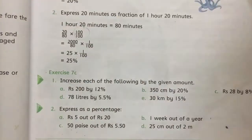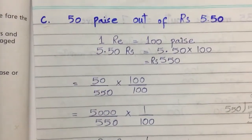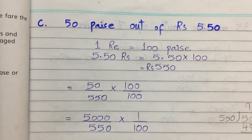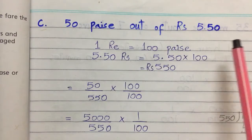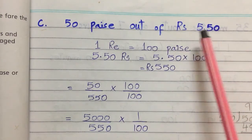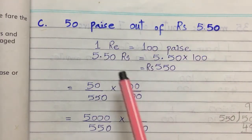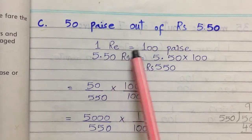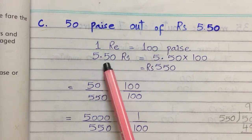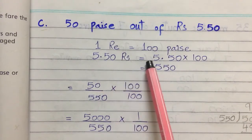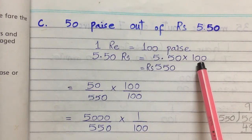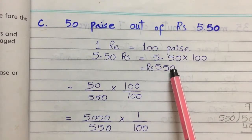Part c is: 50 paisa out of rupees 5.50. First, we convert rupees 5.50 into paisa. One rupee equals 100 paisa, so 5.50 rupees equals 5.50 multiplied by 100, which is equal to 550 paisa.